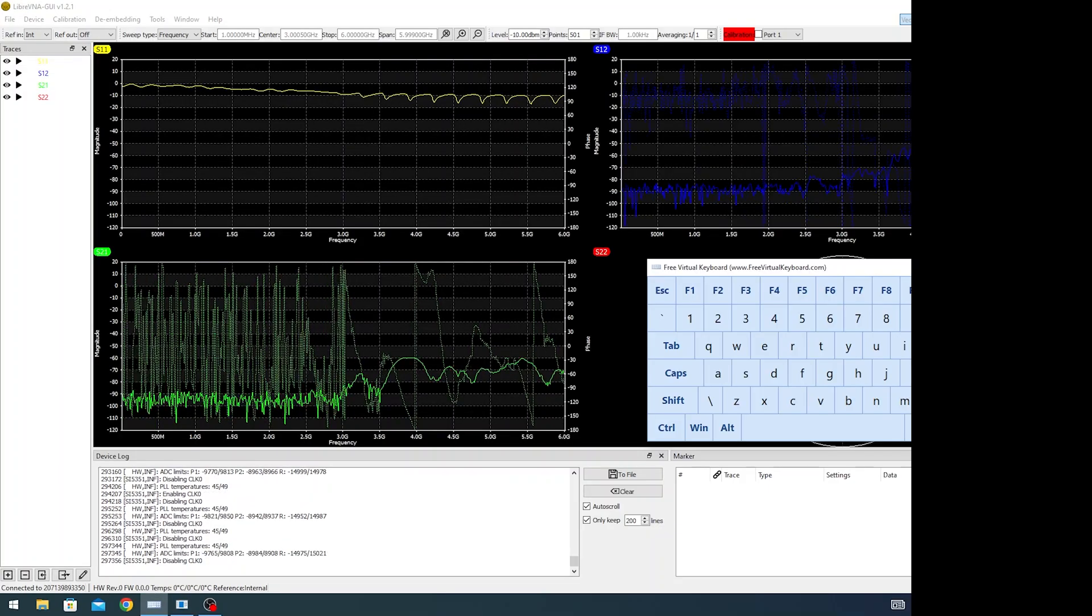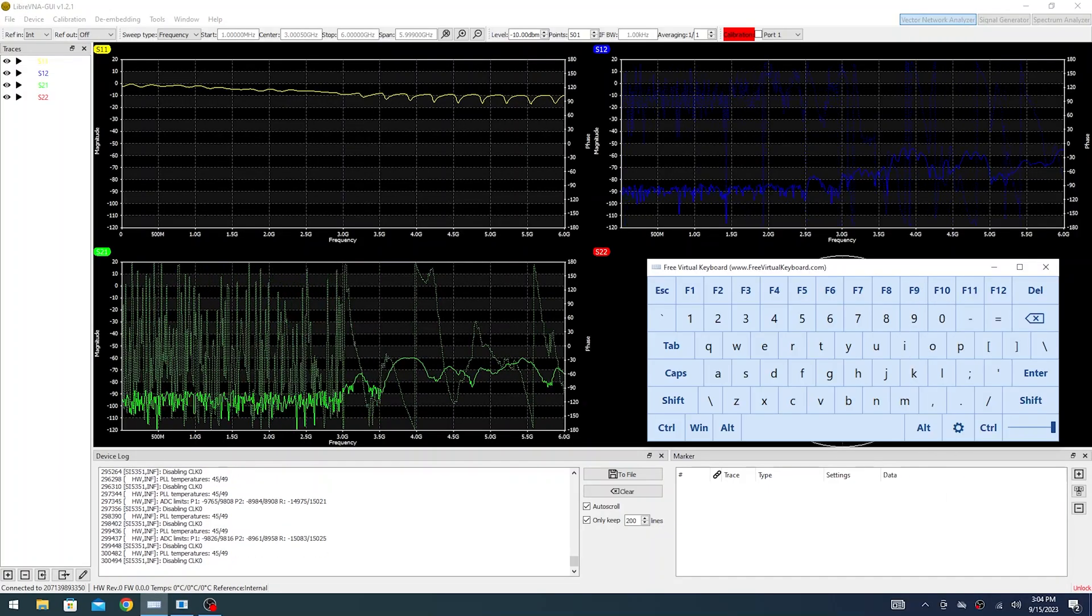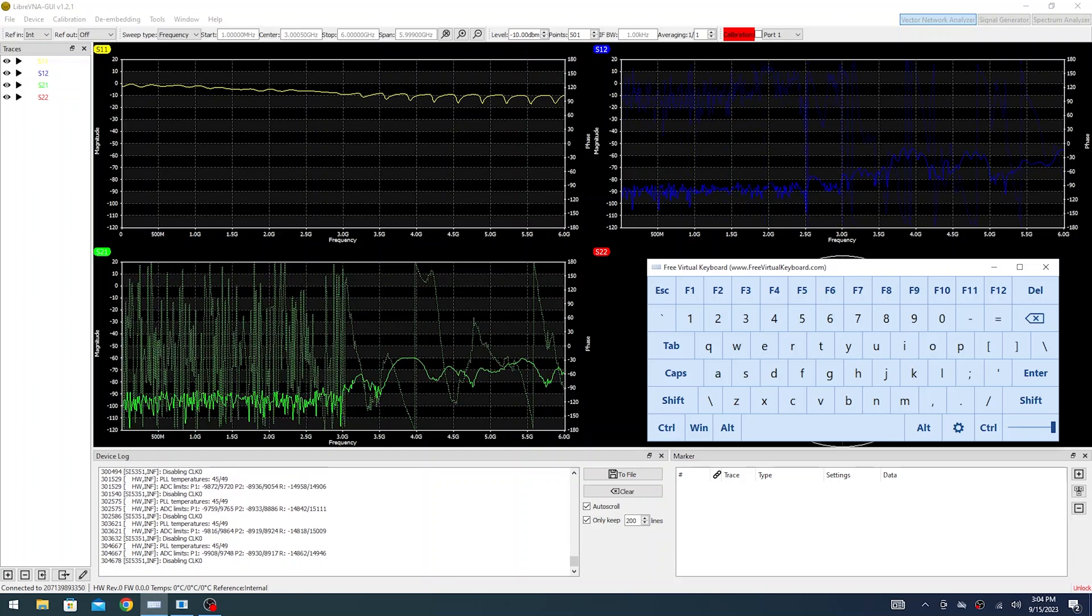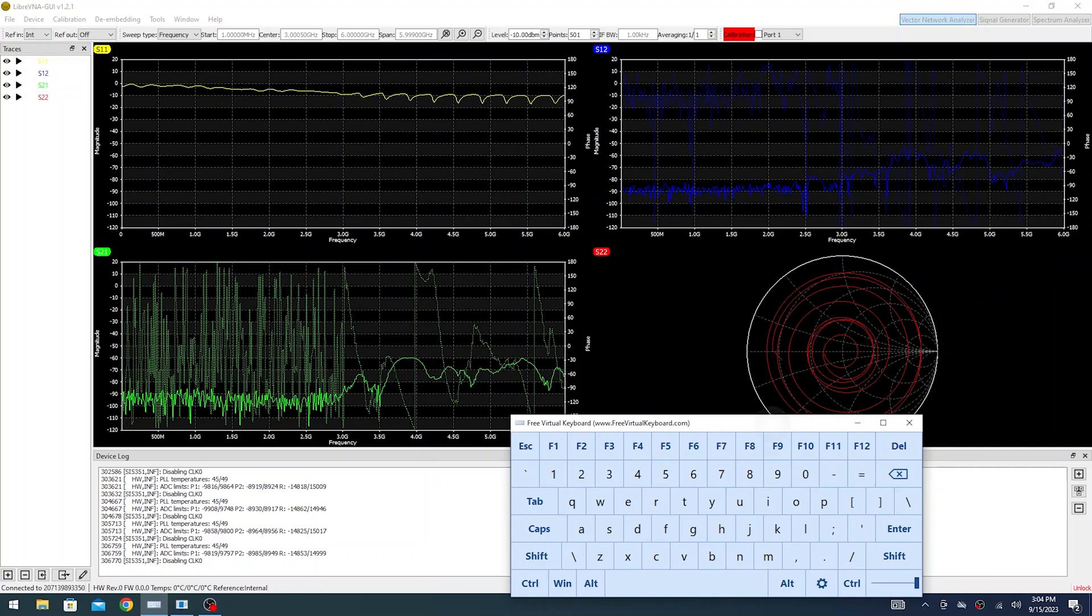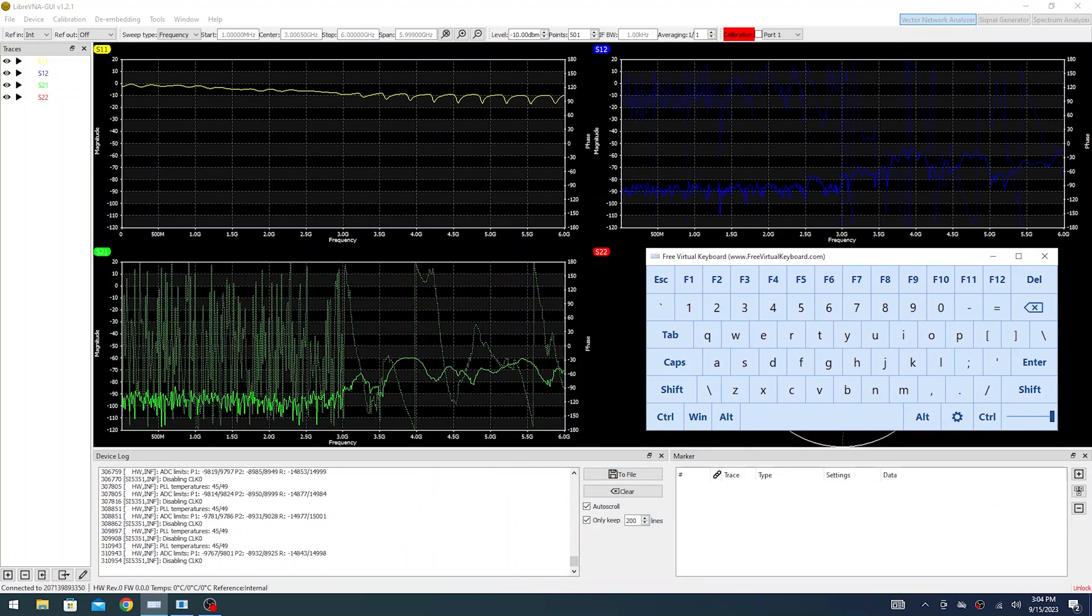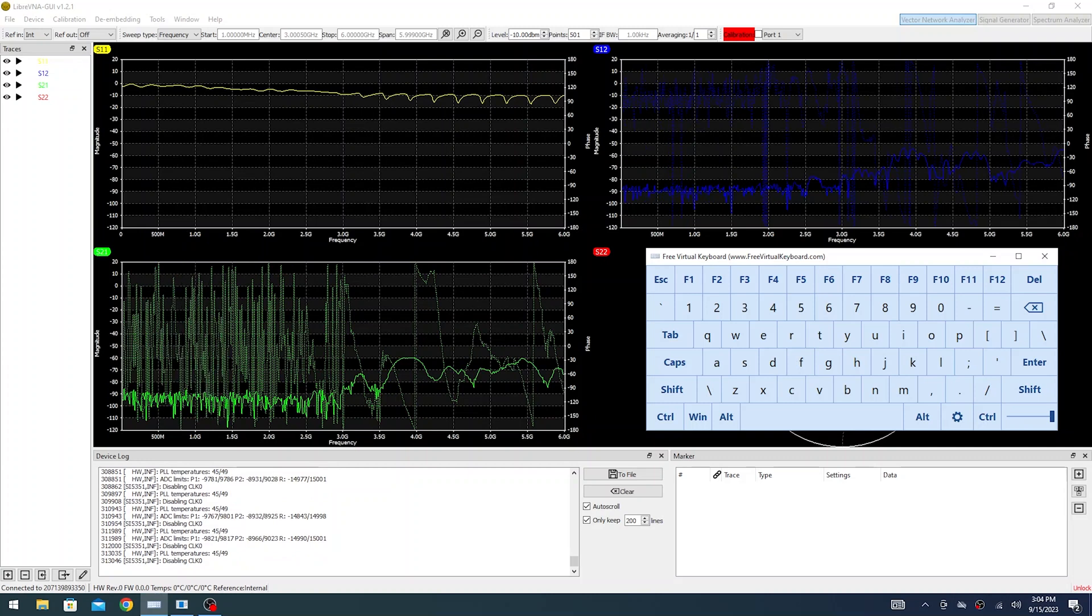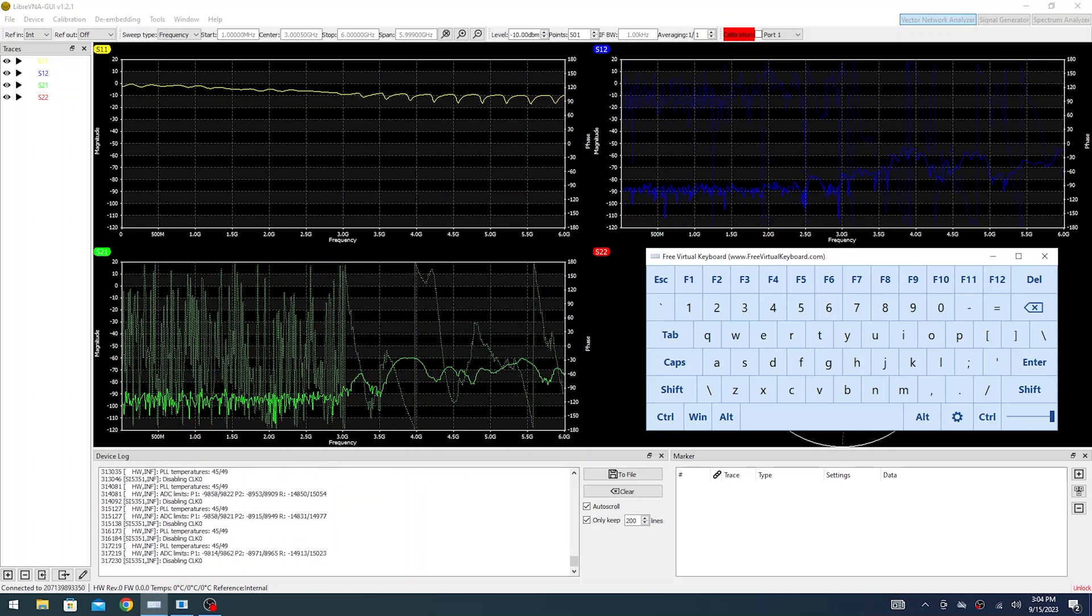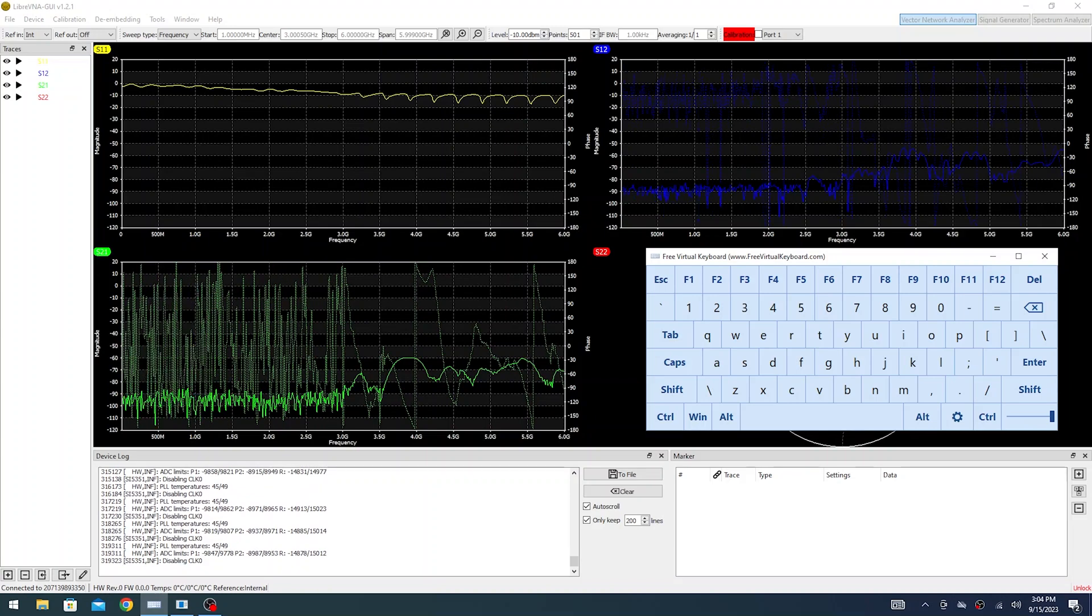So here I have the Libre VNA GUI brought up. We have all four S-parameters for a two-port network being plotted on screen. This also does a Smith chart for one of the ports if you want. Here, I'm not going to worry about that. I just want to focus on S11 and S21 right now. But of course, you could do all the stuff that we're doing here and plot this for S12 and S22.